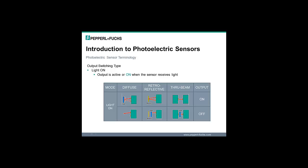Rather than using the standard convention for describing the outputs as normally open or normally closed, most photoelectric sensor manufacturers specify the output behavior as being either light-on or dark-on. For most people, this method is more straightforward and easier to understand. Because photoelectric sensors are available in such a wide variety of sensing modes — through beam, diffused, retroreflective, etc. — the terms light-on and dark-on were introduced to better define what the sensor's output is doing in the absence or presence of light.